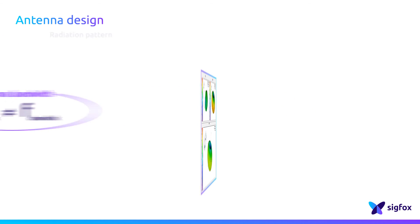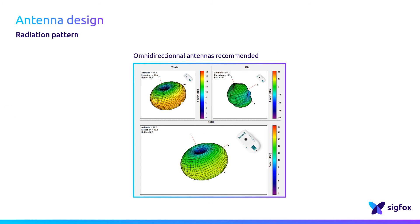Regarding the radiation pattern, something important to keep in mind is that Sigfox strongly suggests using omnidirectional antennas. Sigfox implements space diversity within its network, so when a device is transmitting its radio signal, several base stations within range will receive it. The device is not aware of the base station location — it just broadcasts the message. All the base stations within range will detect the radio signal and demodulate it. To better benefit from the space diversity offered by the Sigfox network, omnidirectional antennas are highly recommended.